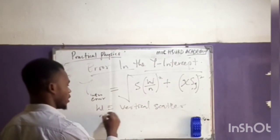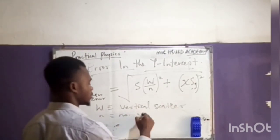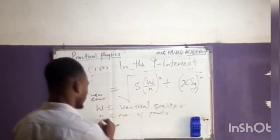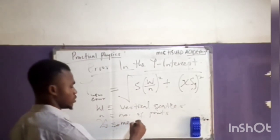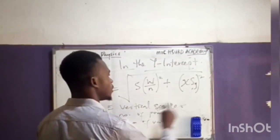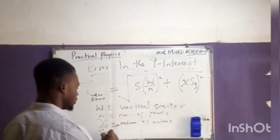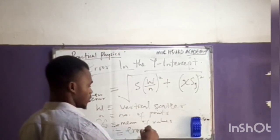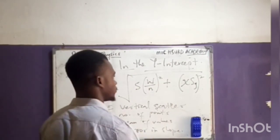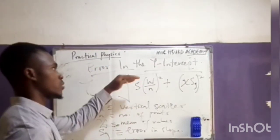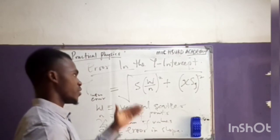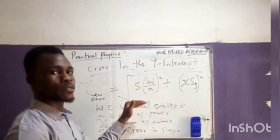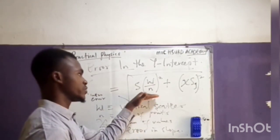In that formula, n is the number of points, x̄ is the mean of the x values, and Sg is the error in the slope. I've already made a video using an example to calculate the y-intercept error with this formula. I'll put the link in the description area so you can check it out.